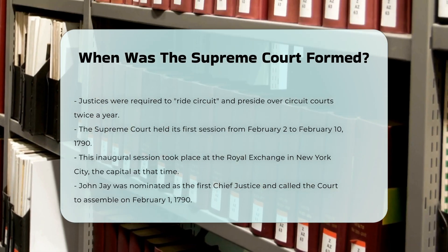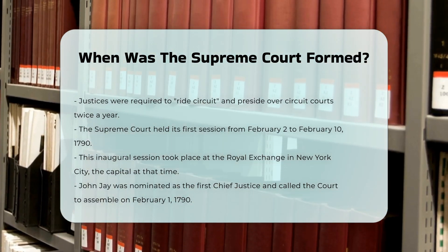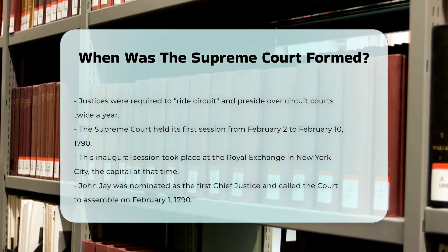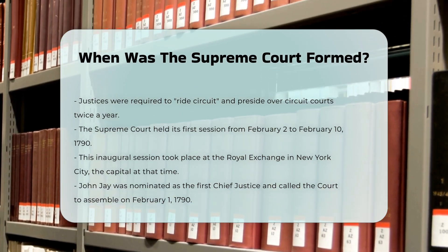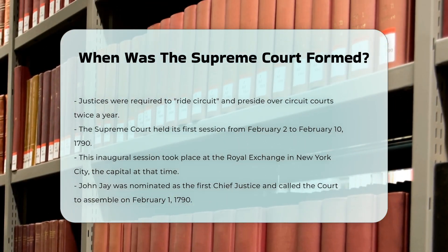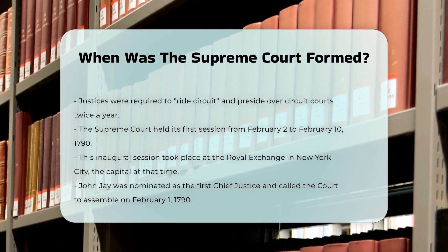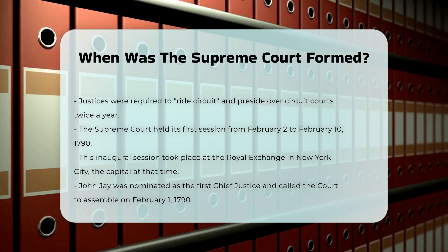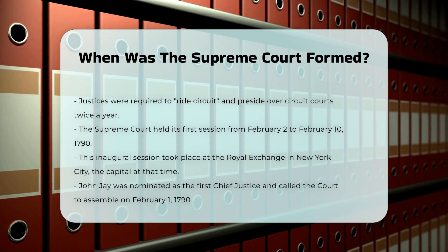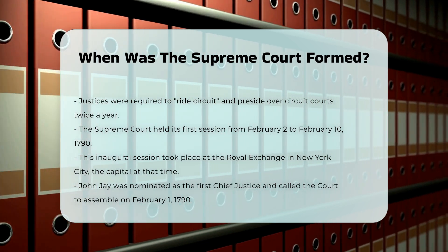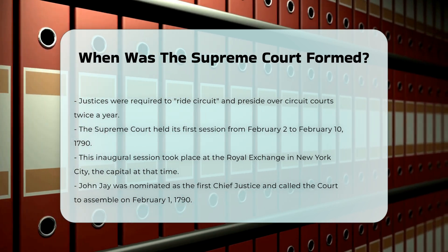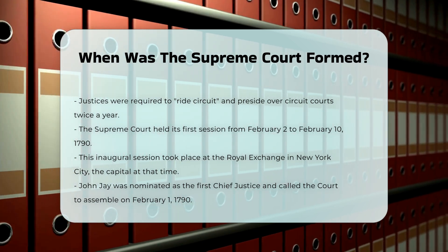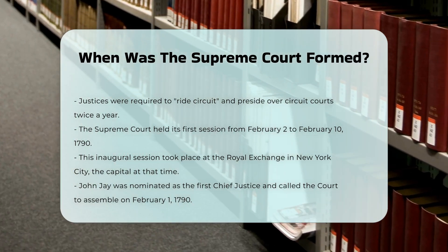The Supreme Court held its inaugural session from February 2 through February 10, 1790, at the Royal Exchange in New York City, which was then the U.S. Capitol. John Jay was nominated as the first chief justice, and he called the court to assemble for the first time on February 1st, 1790.